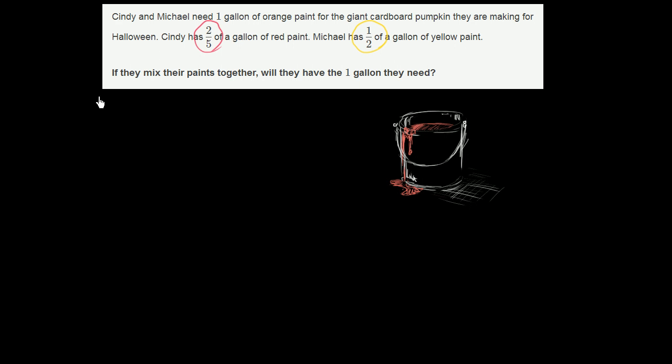So let's think about that. We're going to add the two-fifths of a gallon of red paint, and we're going to add that to half a gallon of yellow paint. And we want to see if this gets to being one whole gallon.